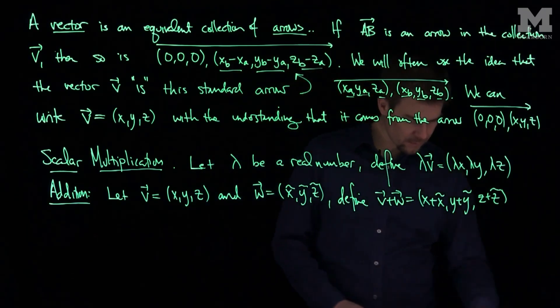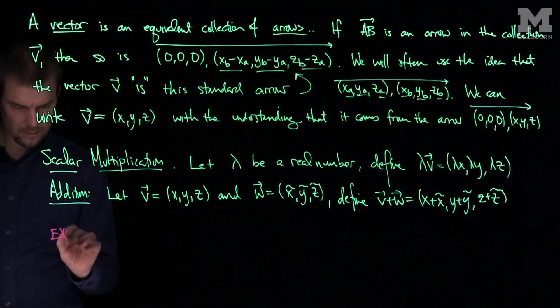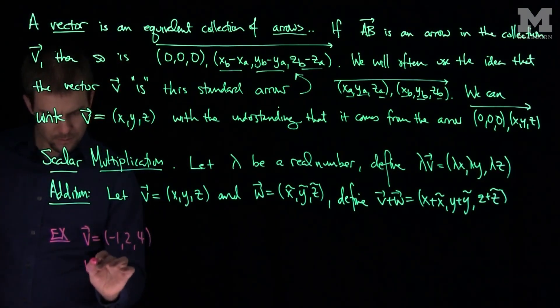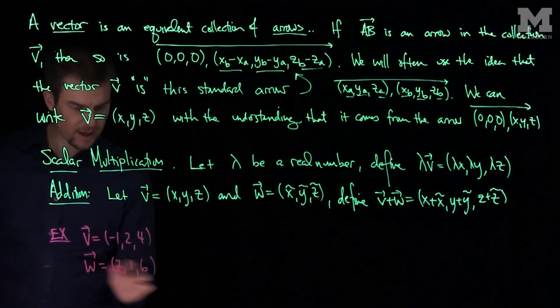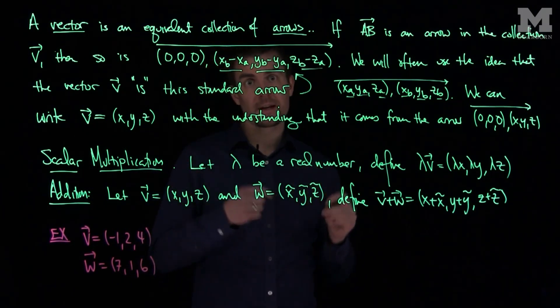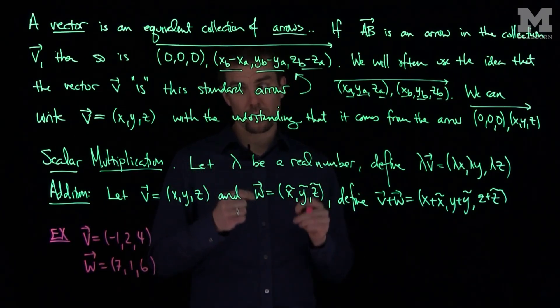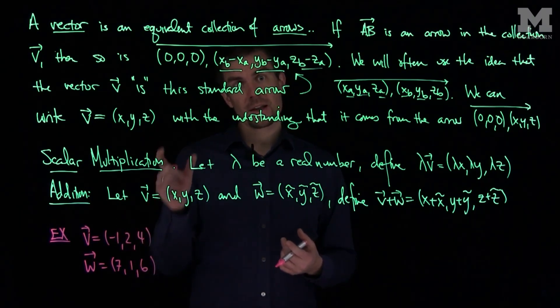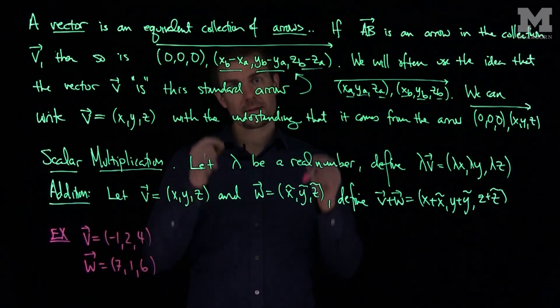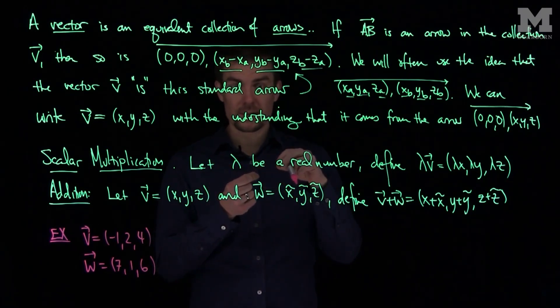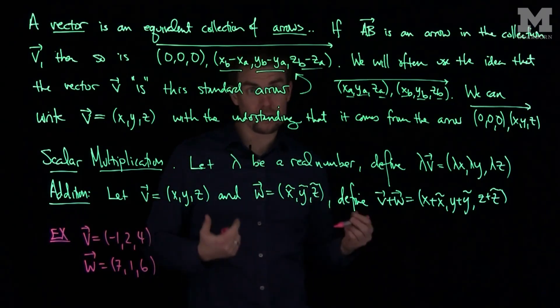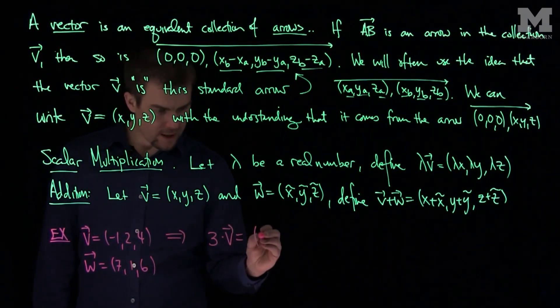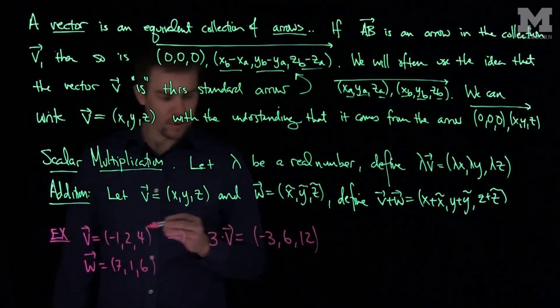Let's do some examples of these things numerically. If I had the vector V which was (-1,2,4) and W is the vector (7,1,6), bearing in mind that when we write a vector as a point, it means the vector comes from the arrow that starts at the origin. Then three times V would be (-3,6,12), as easy as just multiplying the entries of the vector.